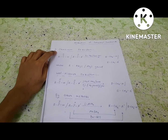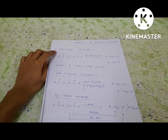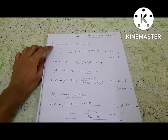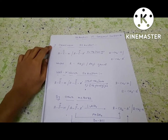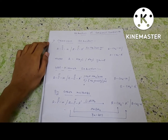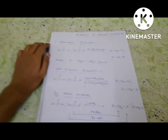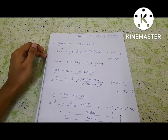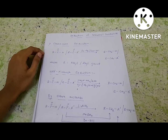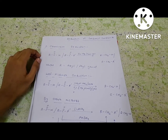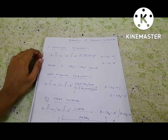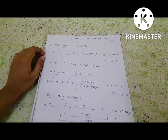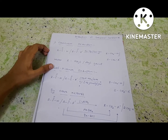In Clemmensen reduction, either an aldehyde or a ketone can be reduced to an alkane by using zinc amalgam and concentrated HCl. Both aldehyde and ketone can participate in this type of reaction, and the ultimate product is an alkane. In the case of a ketone, the R group may be alkyl or aryl.